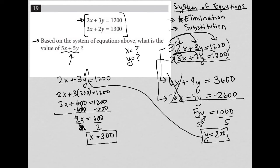Now I know that x equals 300 and y equals 200. But the question is: what is 5x plus 5y? That's going to become 5 times 300 plus 5 times 200.